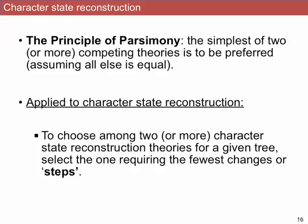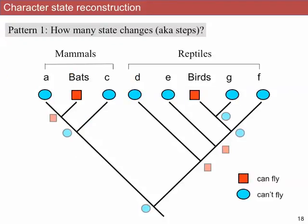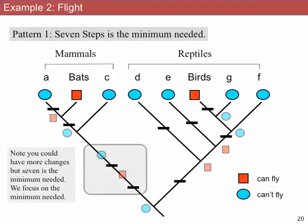We take these three patterns and ask for each of them how many state changes are required to have that pattern occur. We look at each branch connecting nodes in the tree and ask: has the character state changed between the two nodes? If no, we don't require any state changes on that branch. If yes, we require a change somewhere on that branch — we represent that with tick marks. For the first pattern, it requires seven steps. For pattern two, it requires two steps. And pattern three requires six steps.